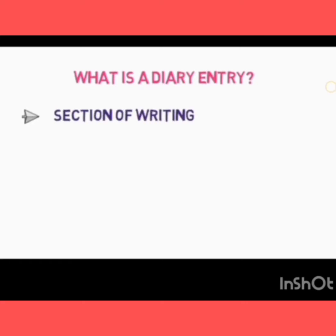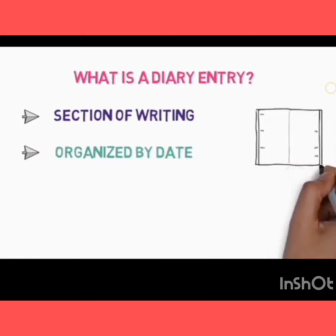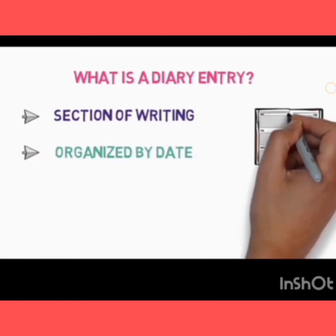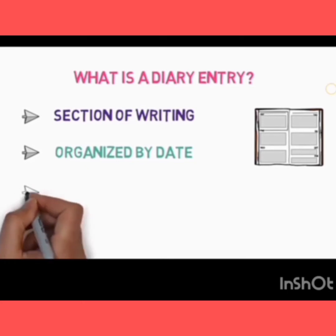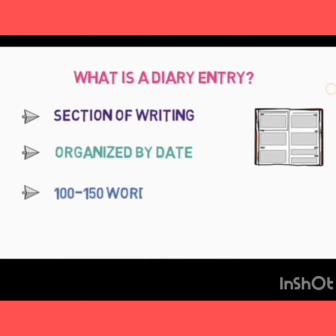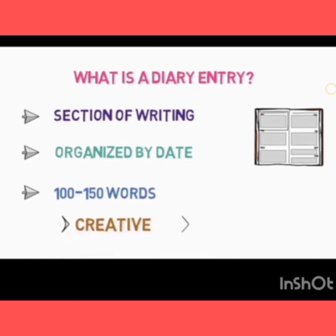In a diary entry, you have a section of writing that you organize by date. First, you write the date and then start writing about the things that happened. It should be around 100 to 150 words. A diary is something creative and thoughtful.